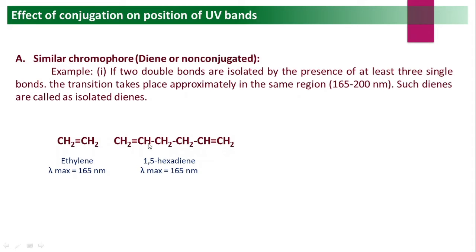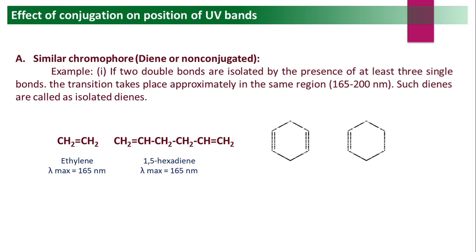For example, ethylene (CH2=CH2) absorbs at 165 nm. 1,5-hexadiene has two double bonds, but they are non-conjugated (isolated). In non-conjugated systems, lambda max remains 165 nm — both double bonds act independently; the chromophore is still just a double bond. It is possible that absorbance intensity may increase (epsilon increases), but lambda max remains the same at 165 nm. There is no resonance effect between isolated double bonds.